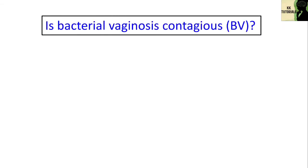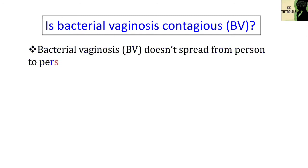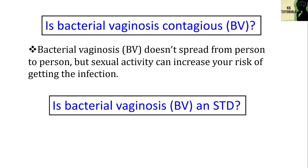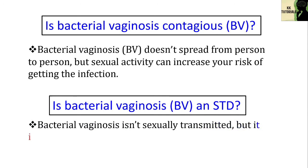Is bacterial vaginosis contagious? Bacterial vaginosis doesn't spread from person to person, but sexual activity can increase your risk of getting the infection. Is bacterial vaginosis an STD — a sexually transmitted disease? Bacterial vaginosis isn't a sexually transmitted disease, but it is linked with sexual activity. Researchers think that sex may change the bacterial environment in your vagina, making bacterial overgrowth more likely.